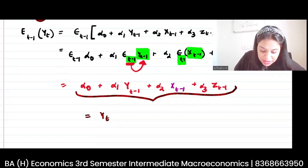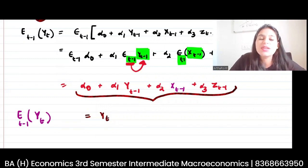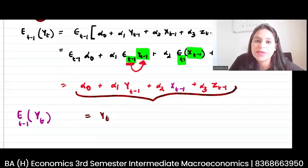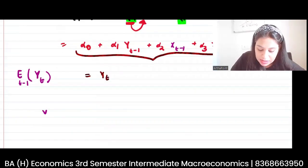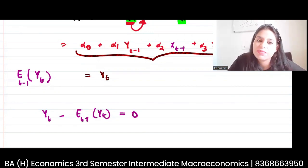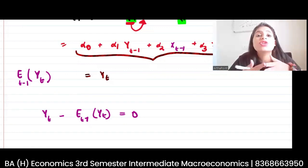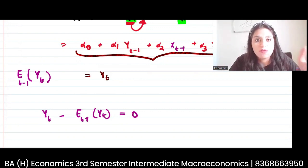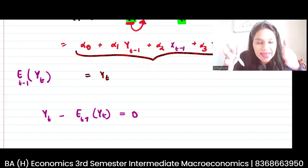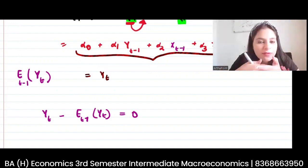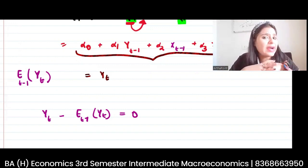This means that the expectation I form about the variable yt in period t-1 is equal to the actual value of yt. So yt minus E(yt) = 0. There is no error that I am making. Because I have taken into consideration every possible information while formulating this value, I know the exact value of this variable and I am making no error.